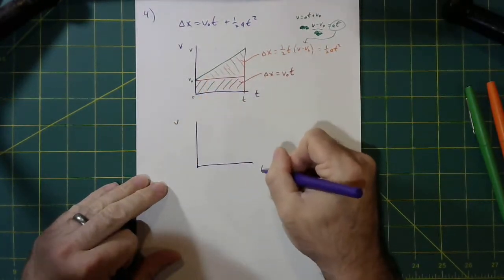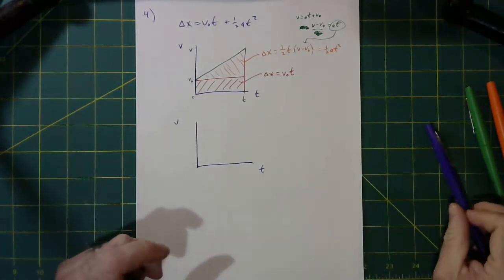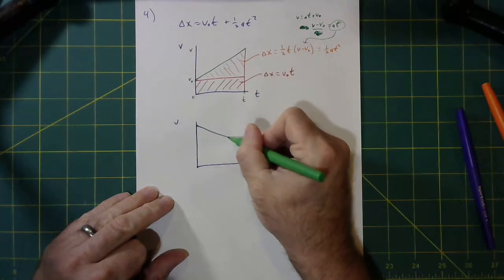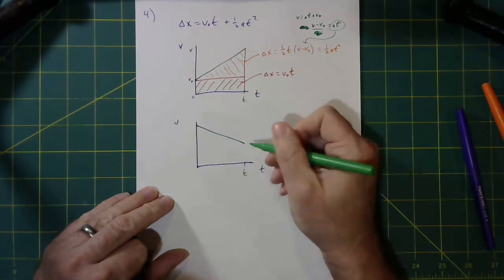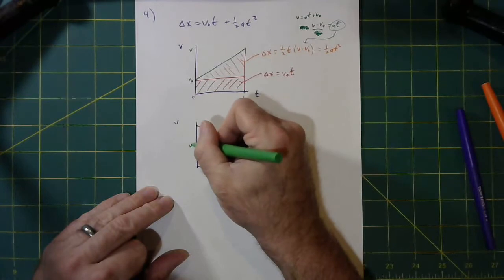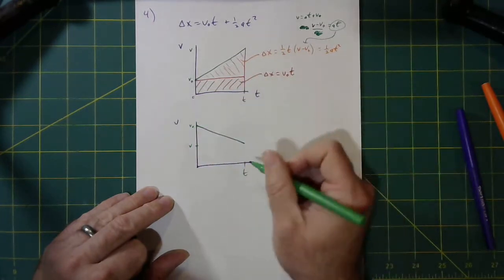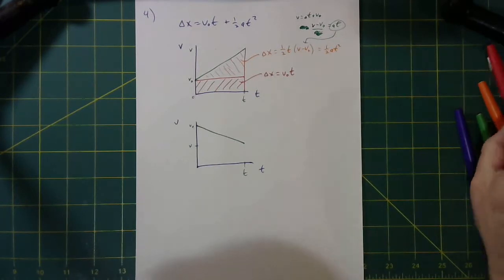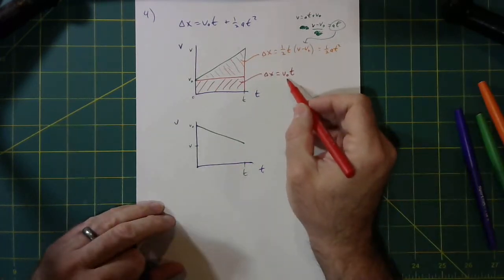Let's do another vt graph with a nice constant acceleration. But this time, let's say that our graph looked like this. And this is my final velocity. This is my initial velocity. Well, now what I'm going to do is I'm going to do the same.